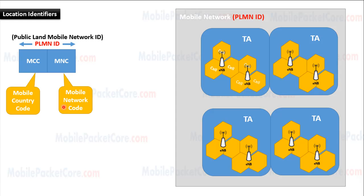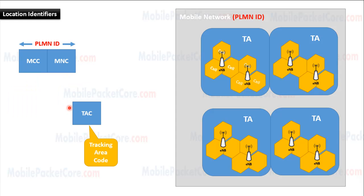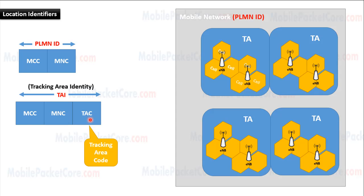Tracking areas are identified by Tracking Area Code, or TAC. TAC identifies every tracking area inside the network. To identify the tracking area globally, we use the Tracking Area Identity, TAI. The TAI consists of the Mobile Country Code (MCC) and Mobile Network Code (MNC), in addition to the Tracking Area Code (TAC).